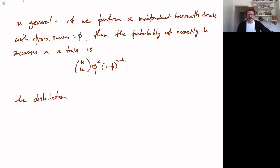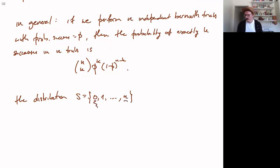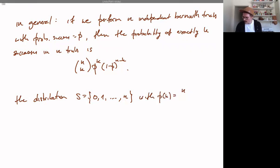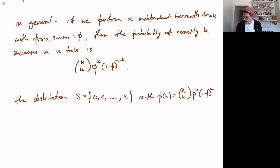This gives us an example of a distribution. The sample set S is {0, 1, ..., N} — all the possibilities for the number of successes in N trials, from all failures to all successes. And our probabilities are p(k) = N choose k times p^k times (1 minus p)^(N minus k). This is called a binomial distribution.